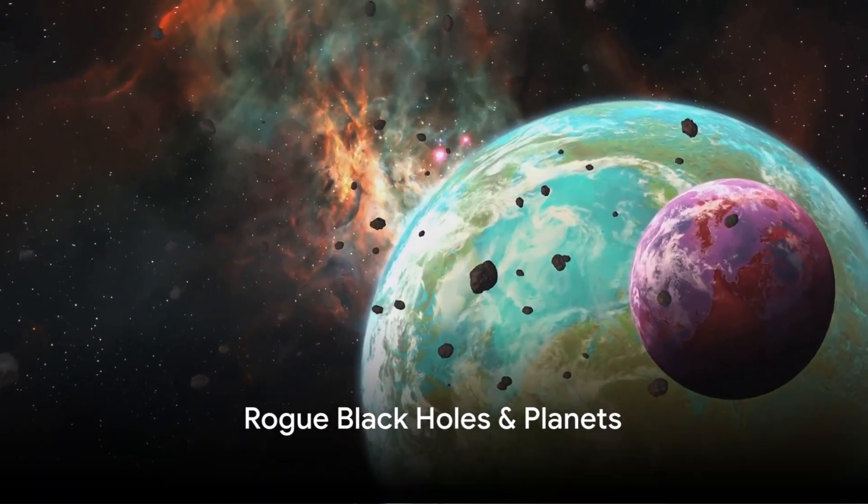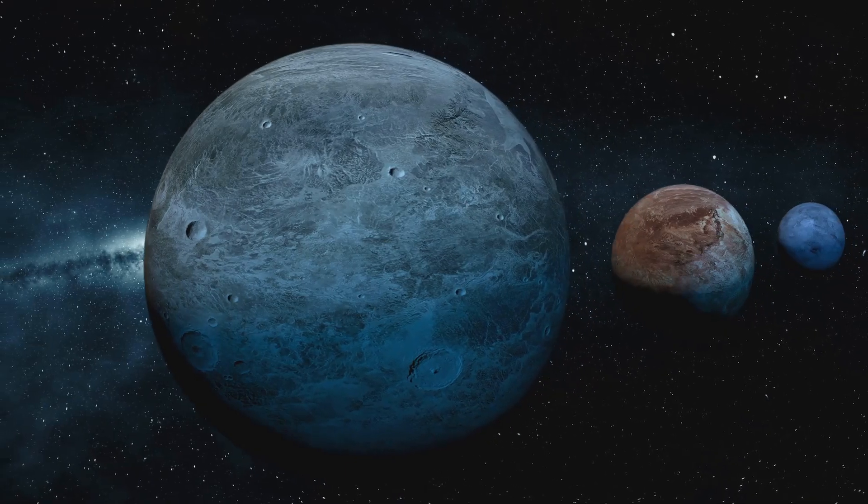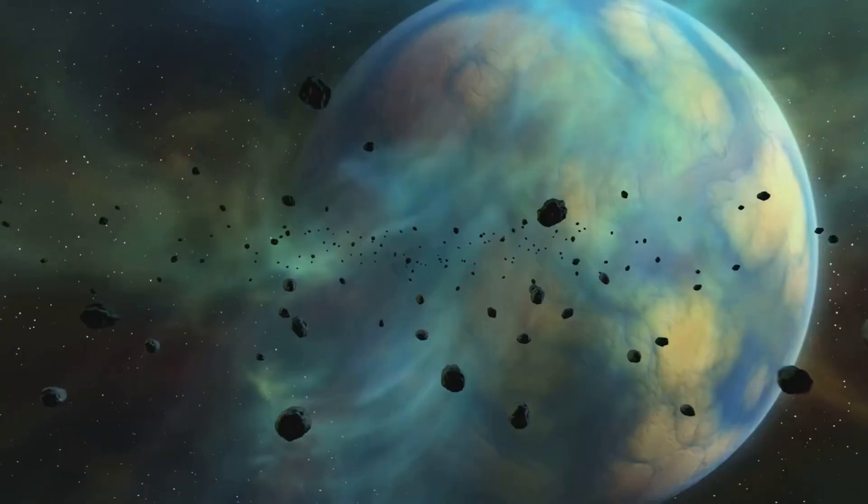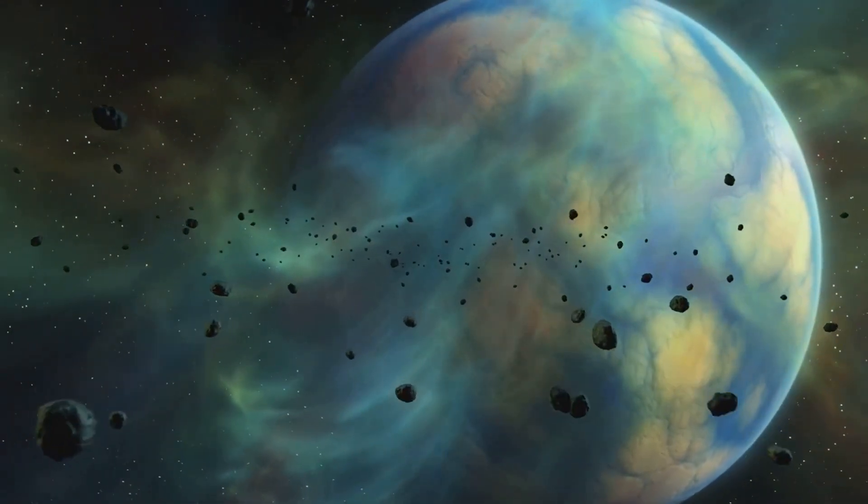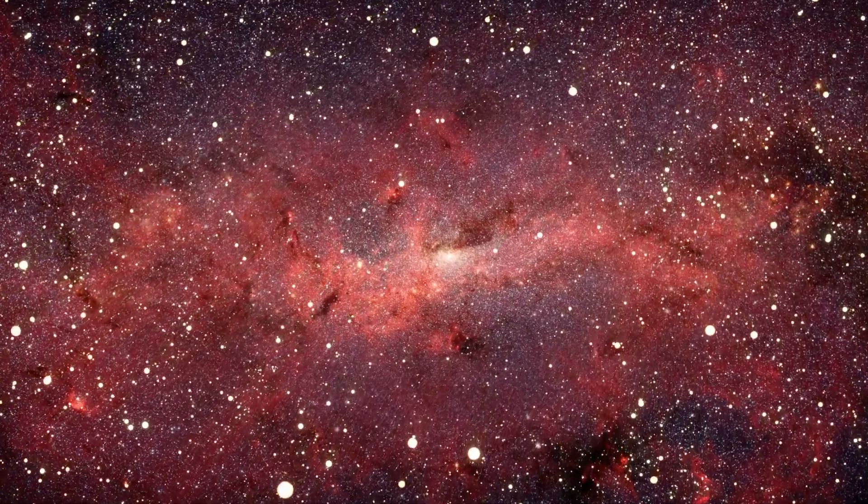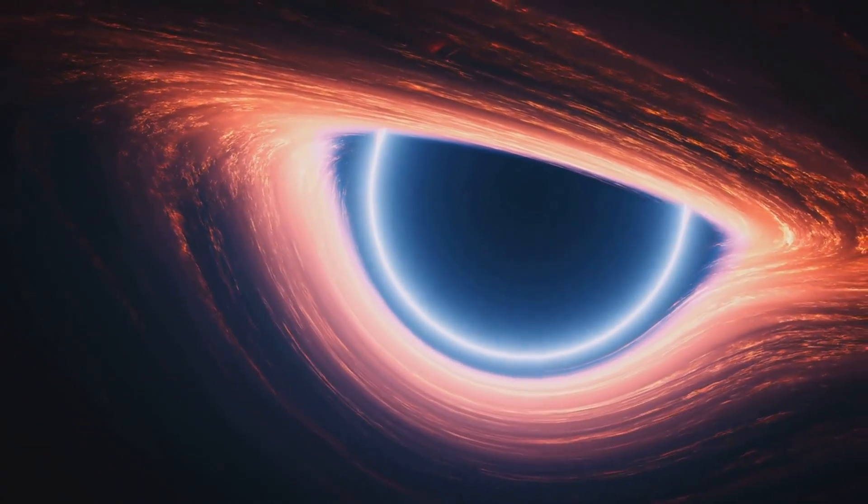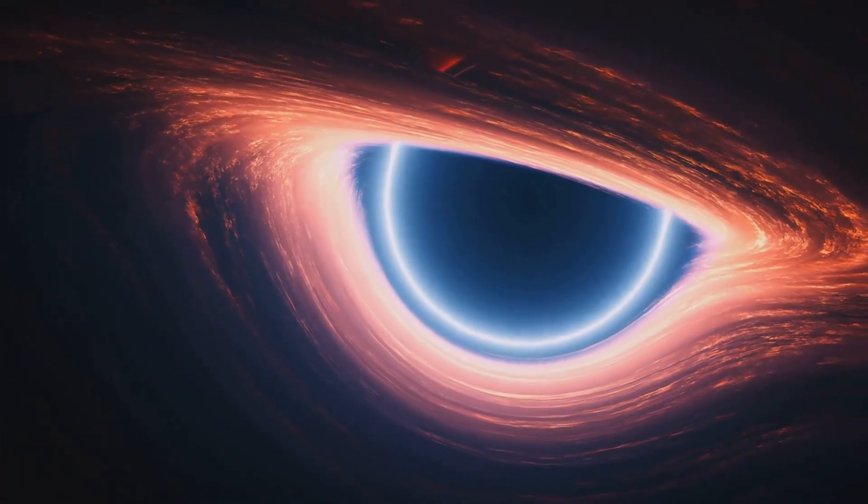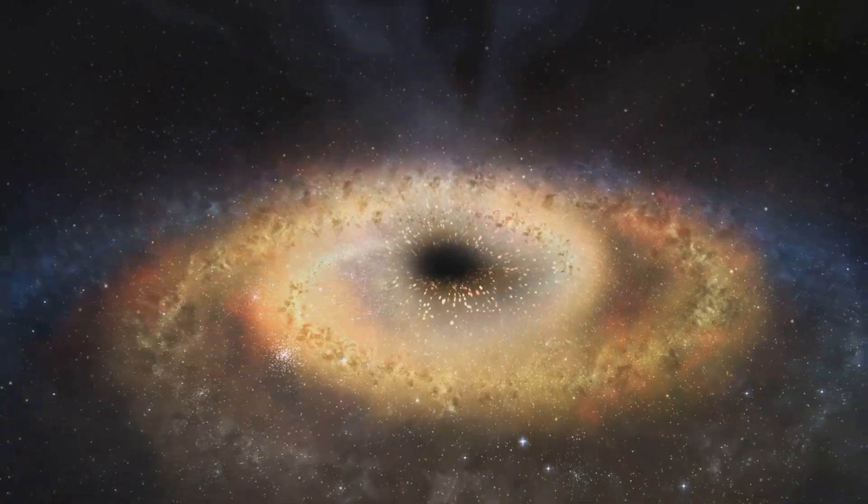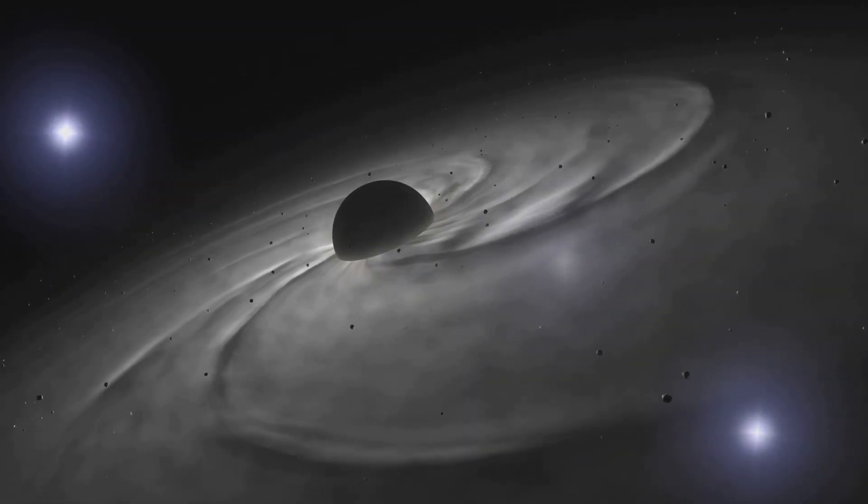From the depths of space, we bring you the chilling concept of rogue black holes and planets. Imagine celestial bodies expelled from their homes, wandering aimlessly through the void. These are the rogues of the cosmos. Rogue planets are orphaned worlds, cast out from their solar systems by violent gravitational events. They drift through the interstellar medium, invisible and alone, their paths unpredictable. Now take that unsettling image and multiply its menace a million times over. That's where rogue black holes come into the picture. Born from the explosive deaths of massive stars, black holes are regions of spacetime where gravity is so strong that nothing, not even light, can escape their grasp.